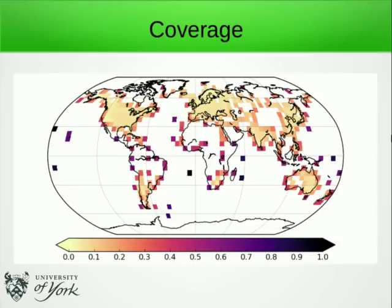Here's a more realistic case based on a month from the CRUTEM-4 data. You can see that isolated observations receive the highest weight. Pairs of neighbouring observations receive about half weight. In densely sampled regions, each cell is weighted in inverse proportion to the density of observations in that area.